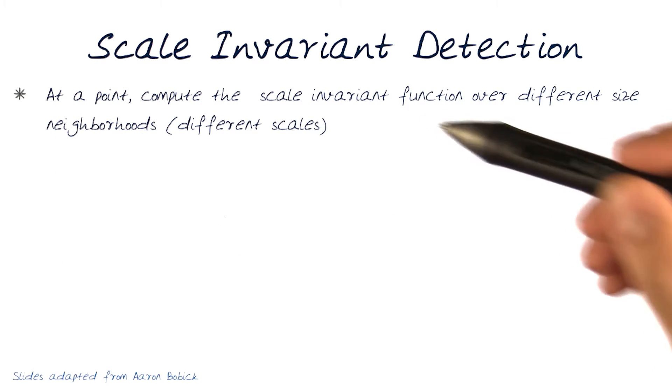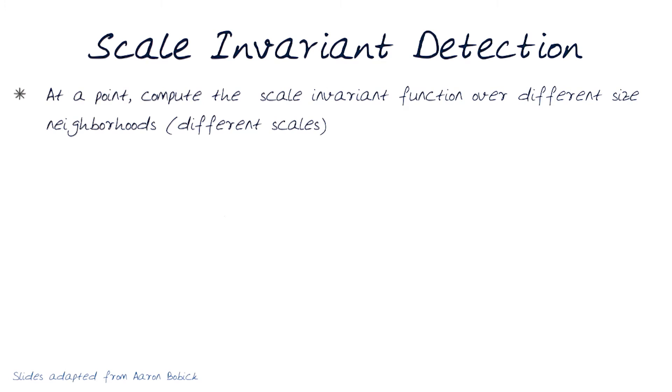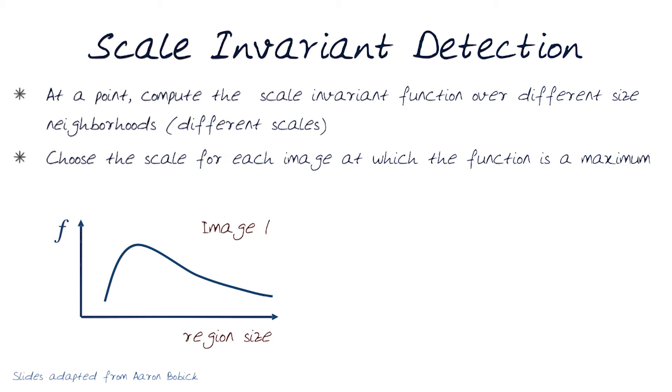We resolve this by computing the intensities at different scales. At a point, compute the scale invariant function at different sizes and different neighborhoods. Then choose the scale for each image at which the function is maximum.